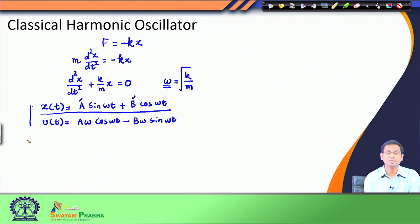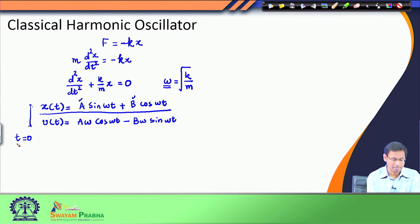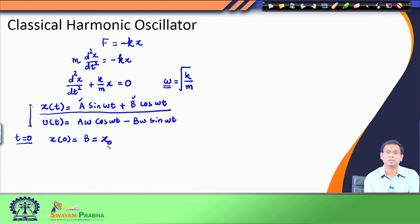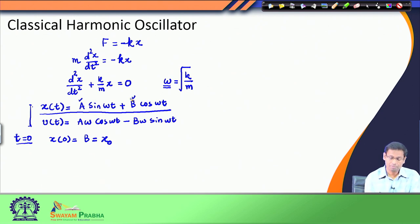I now apply the initial value condition. At time t = 0, putting t = 0 in the position equation: the sine term becomes sin(0) = 0, and the cosine term becomes cos(0) = 1. Therefore, x(0) equals b, which I define as x₀ — the equilibrium or starting position of the oscillator. So b is the initial position x₀.